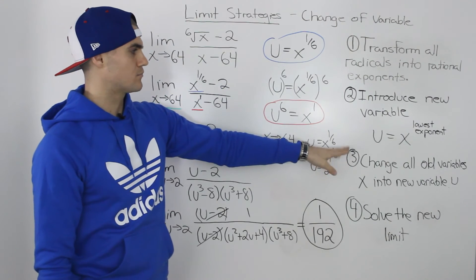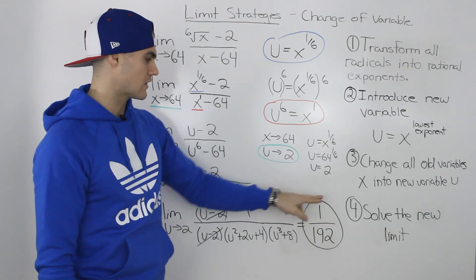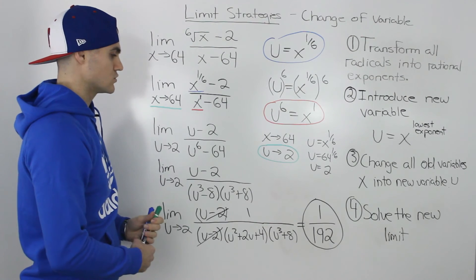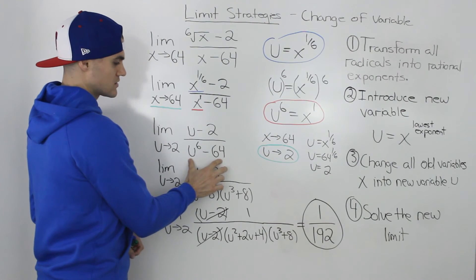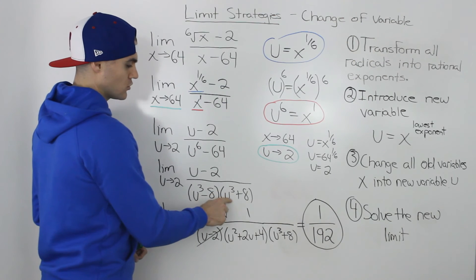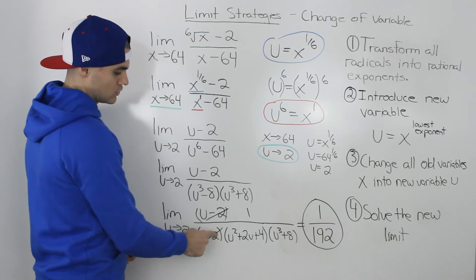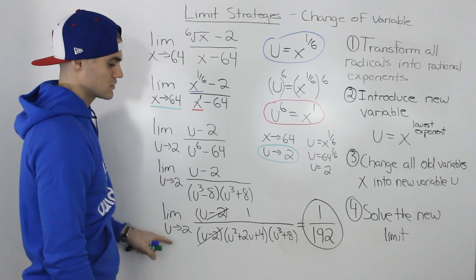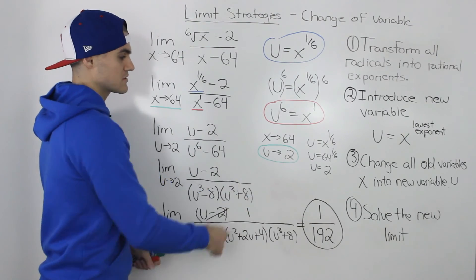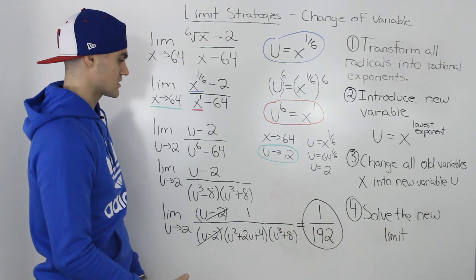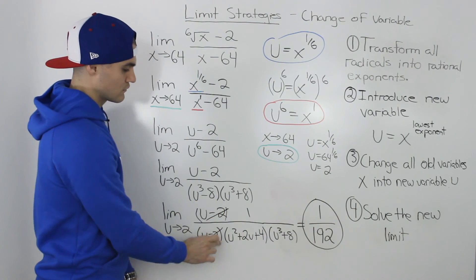As mentioned, steps 1 to 3 were straightforward, very similar to previous examples. The toughest part was solving the new limit, which required two types of factoring: first a difference of squares on u to the power of 6 minus 64 to get (u to the power of 3 minus 8)(u to the power of 3 plus 8), and then a difference of cubes on u to the power of 3 minus 8, allowing the u minus 2's to cancel.